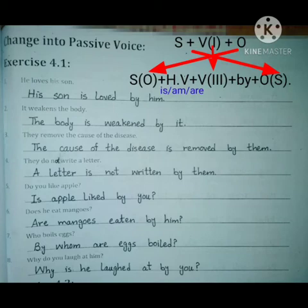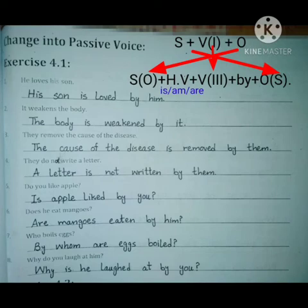Next: Does he eat mangoes? Mangoes is the object and comes to the subject position. He is the subject and moves to the object position, converting to 'him.' 'By' is placed before him. The third form of eat is 'eaten.' Now we put the helping verb before the subject. Mangoes is plural, so the helping verb is 'are.' Result: Are mangoes eaten by him?